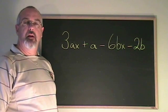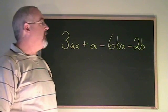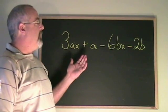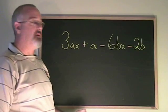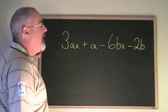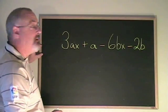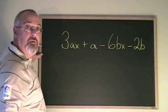Grouping is a method of factoring that we can use with expressions that have an even number of terms, usually four or six terms. We would like to factor this with common factor, but there is no common factor of these four terms.